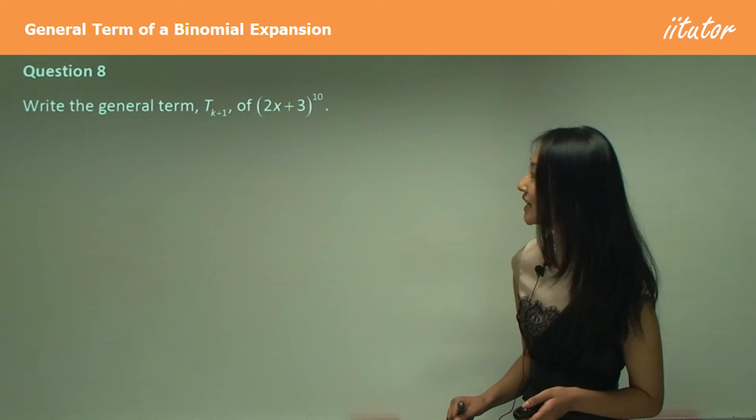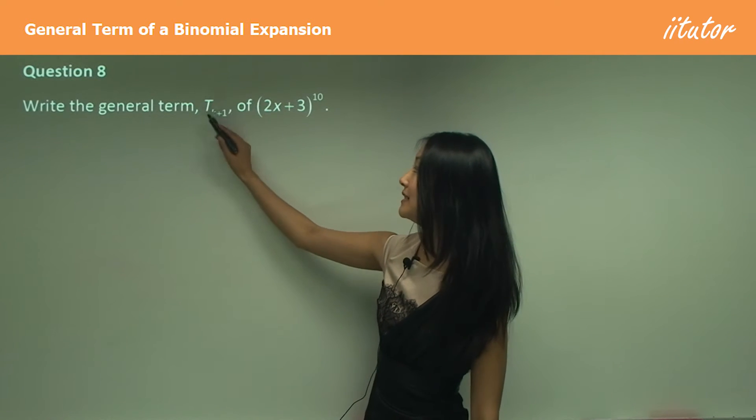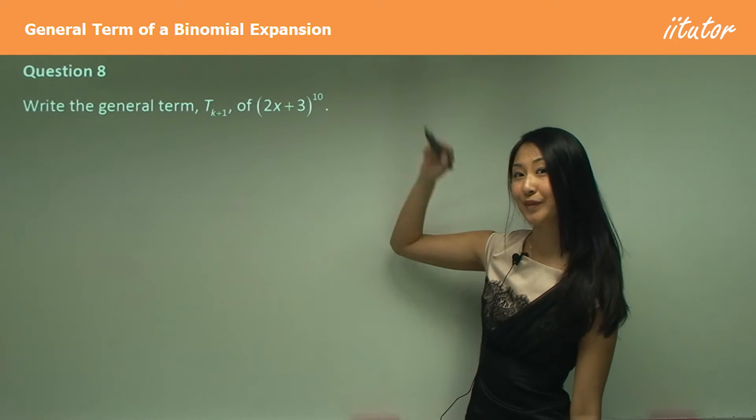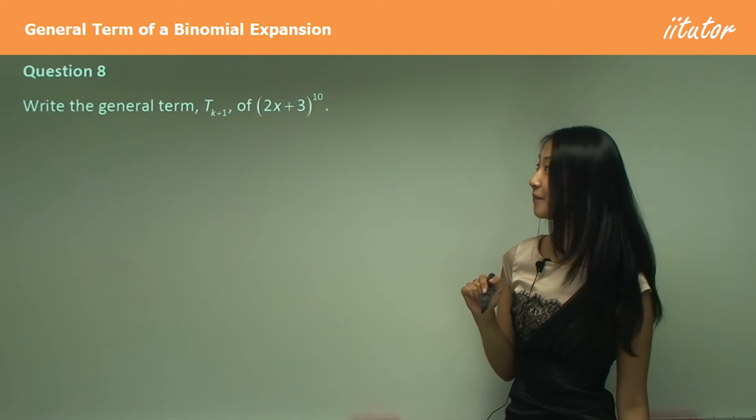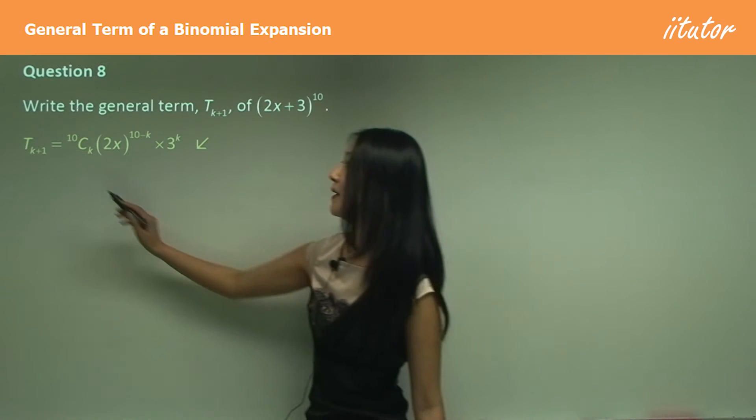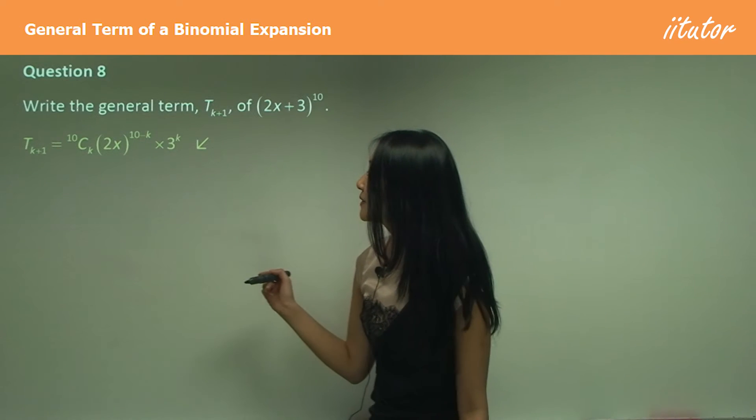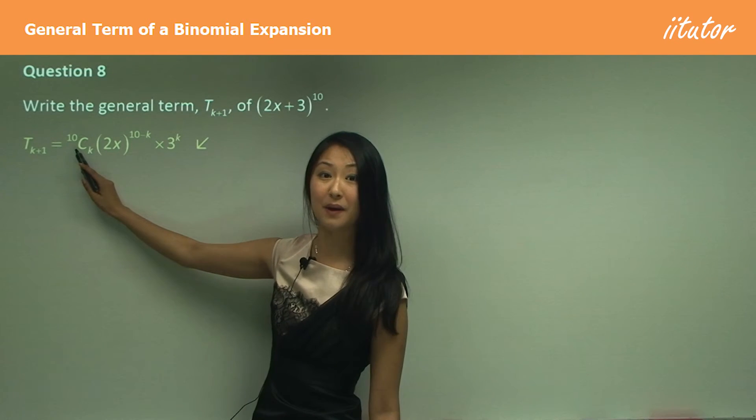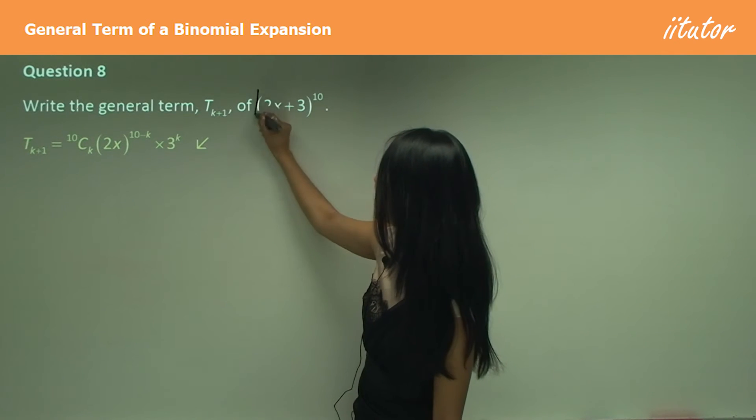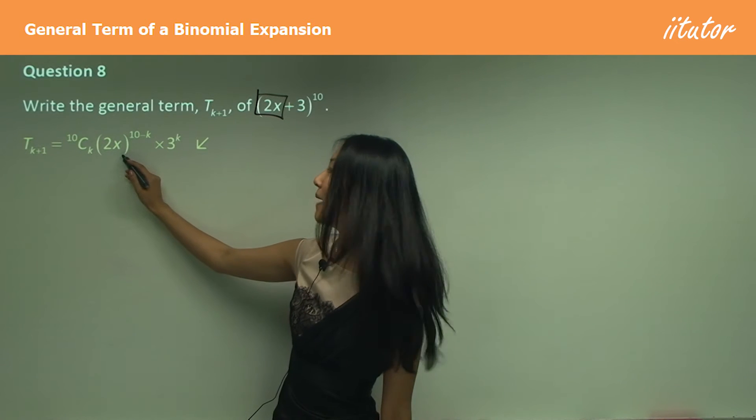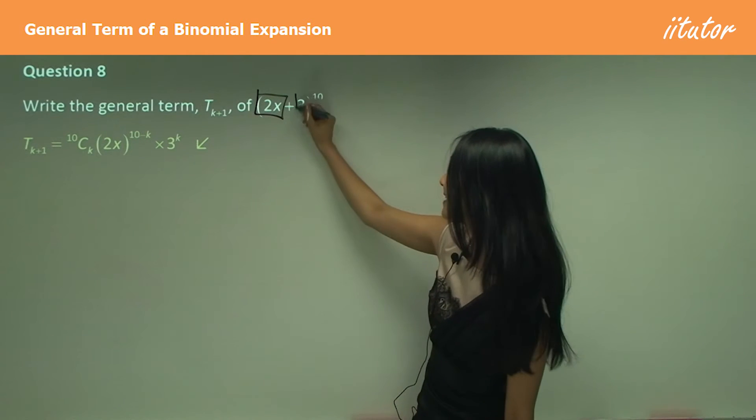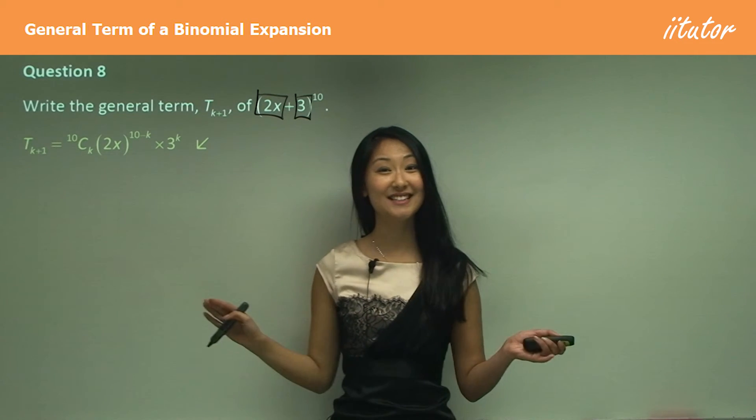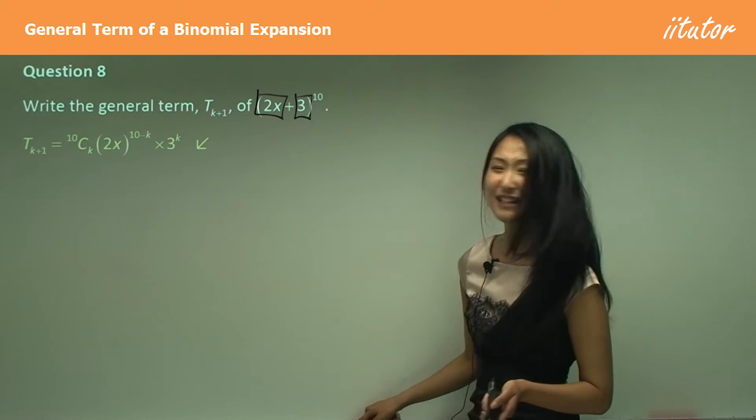I want you to try writing the general term for T_{k+1} of (2x+3)^10. Okay, so I want you to try writing general term for that. So remember, general term is always T_{k+1}. And it's quite simple, because we just have a look here, that's to the index of 10. So this here is 10 as well. So it's just 10Ck. And then 2x is our first term. So we have (2x)^{10-k}. Our second term is positive three. So it's just times 3^k there. And that's it. That's all you need to do for that one there.